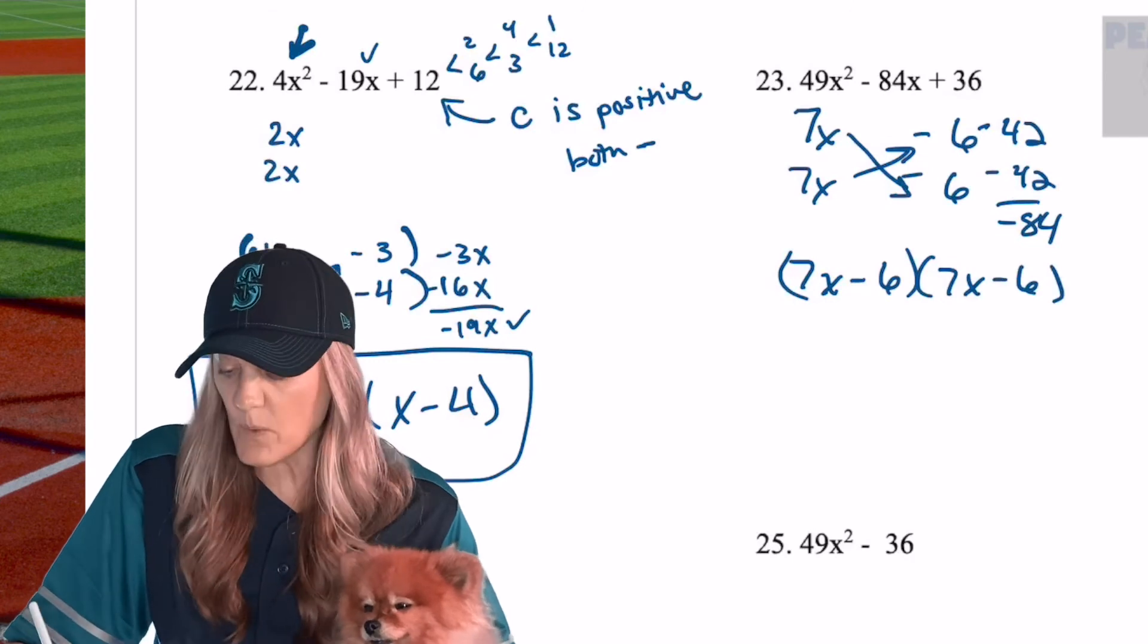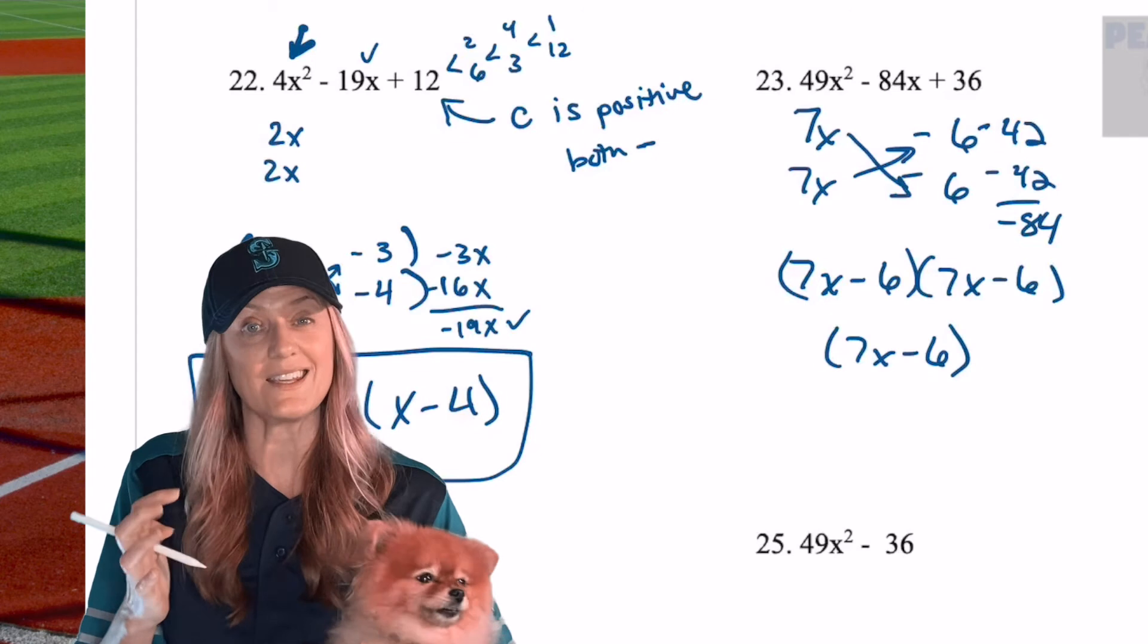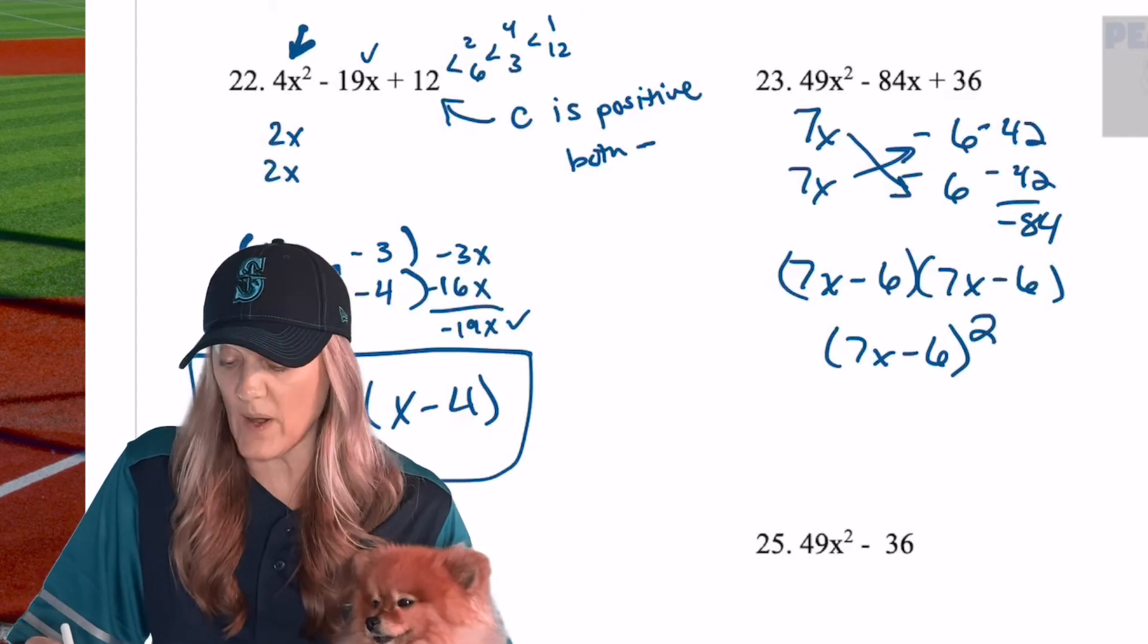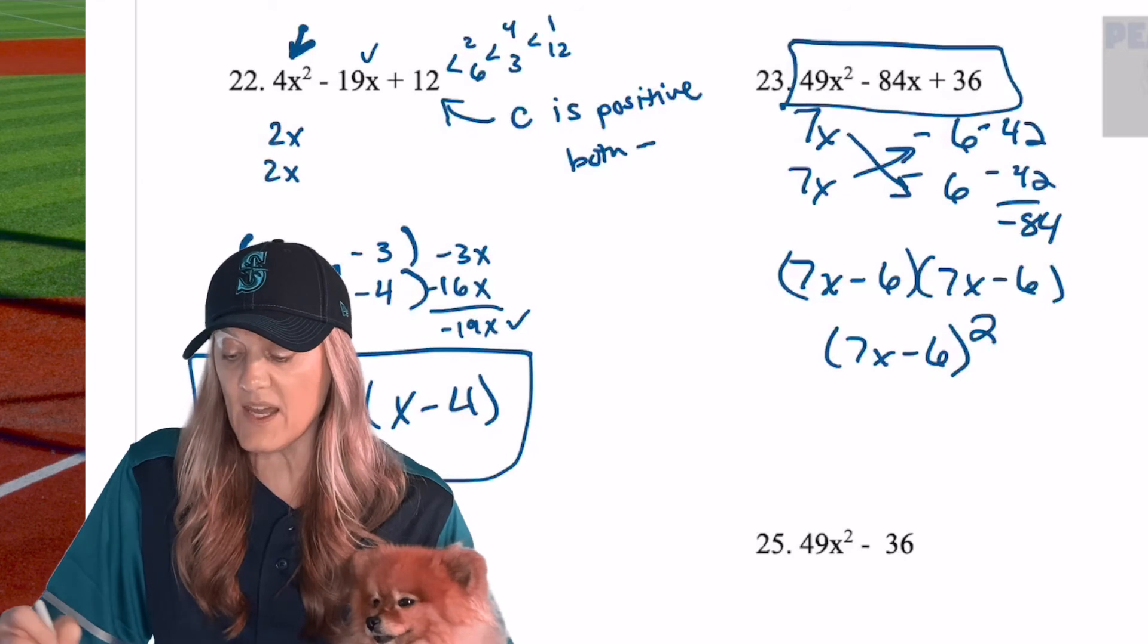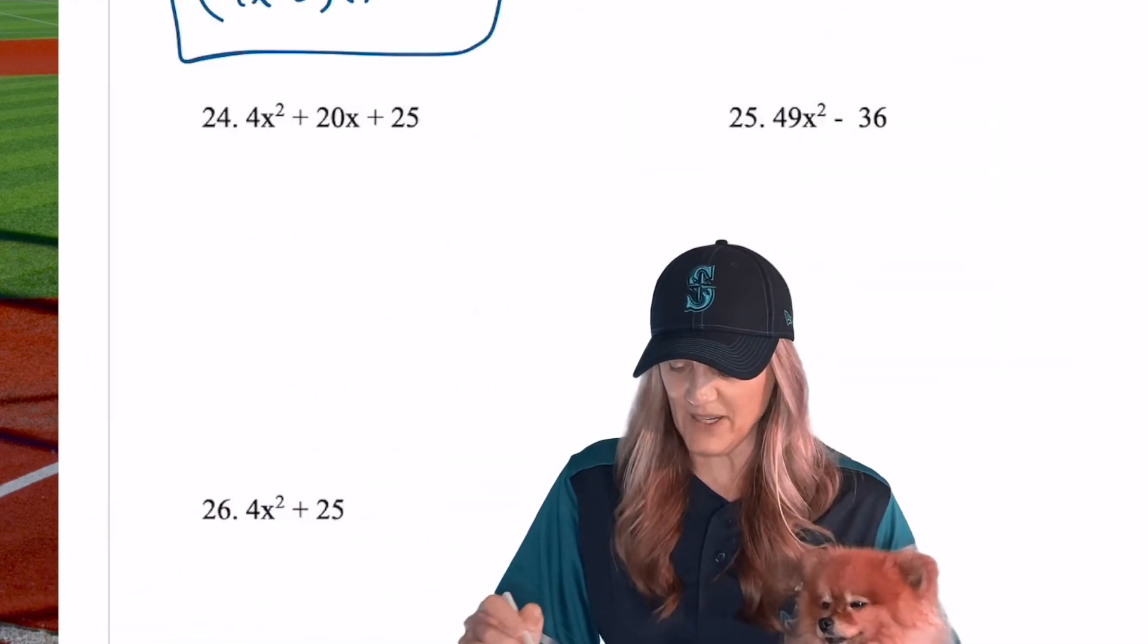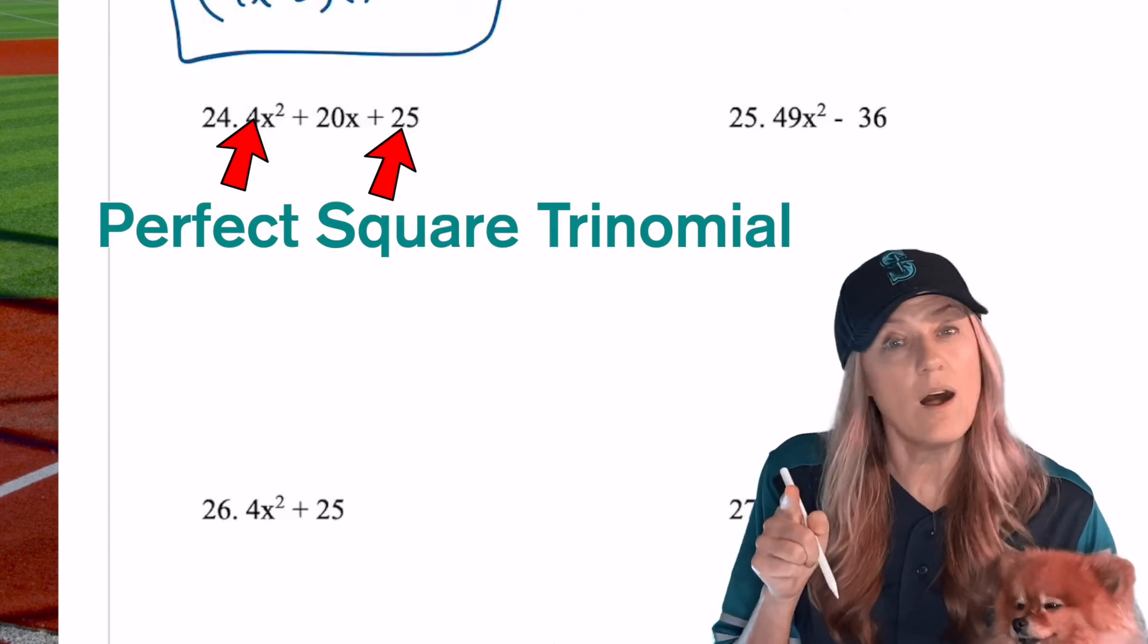Well, we can rewrite that because what are we actually doing? We're taking 7x minus 6, that quantity, and we're squaring it. This is known as a perfect square trinomial because we get it by squaring a binomial. Next one, take a look at 24. How quick can you do it? Go, I'll race you.